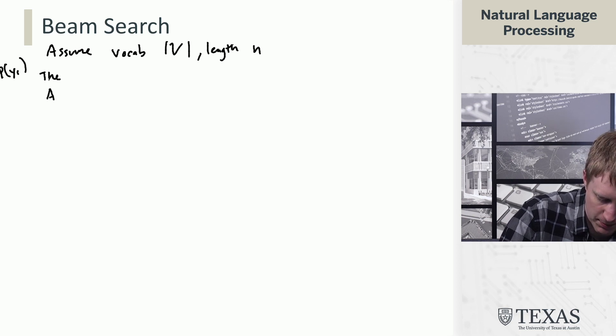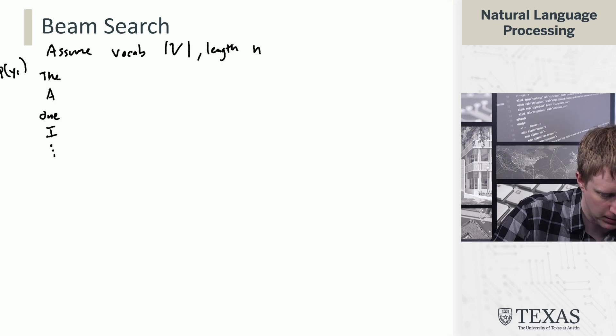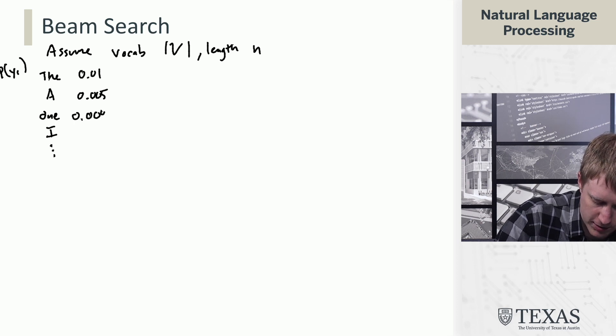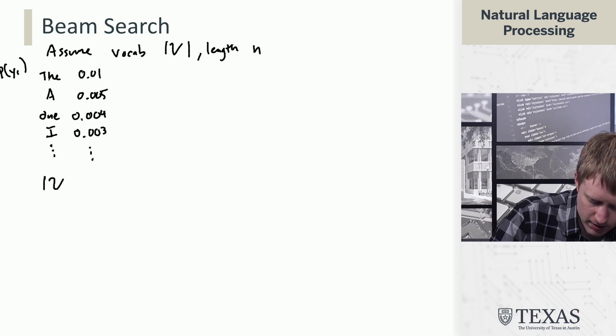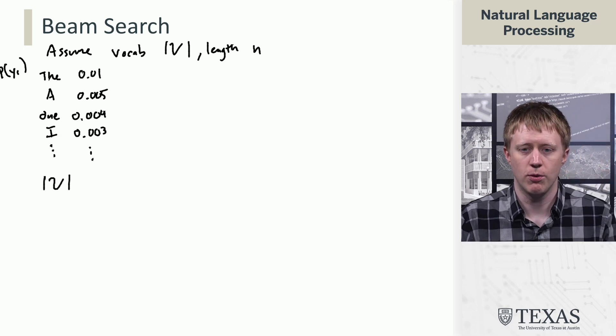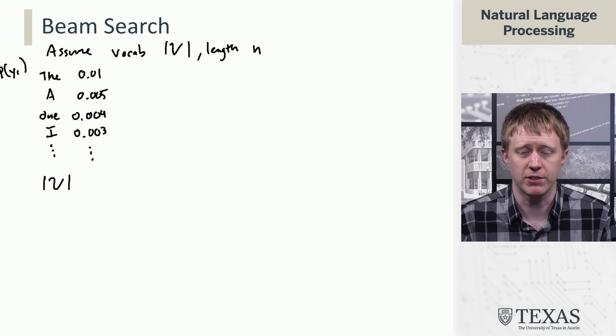I'm just going to make up some words and some probabilities here. Each of these things has a pretty low probability. The model doesn't really know what it's supposed to say. There are v of these, so there are a lot of different words that we have to consider here.